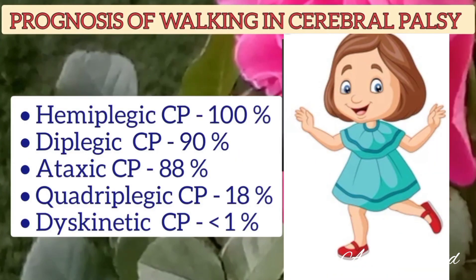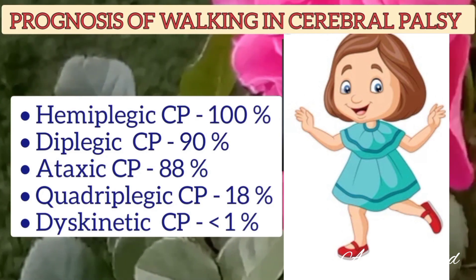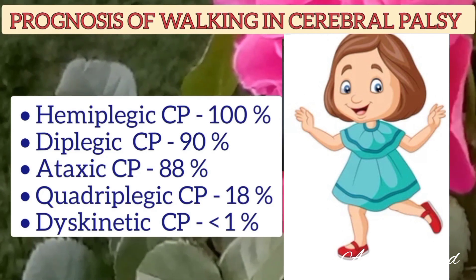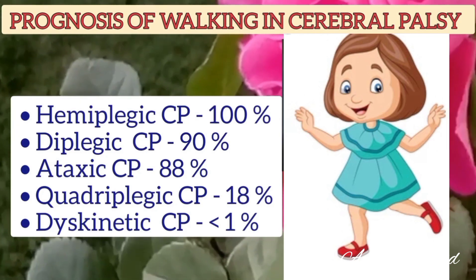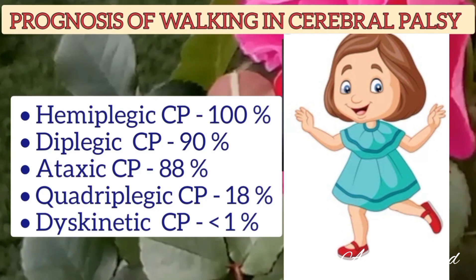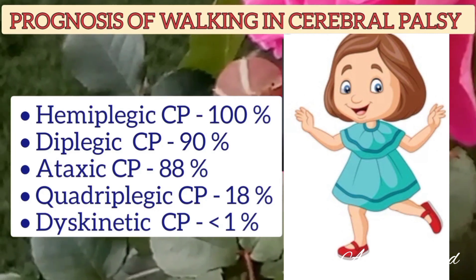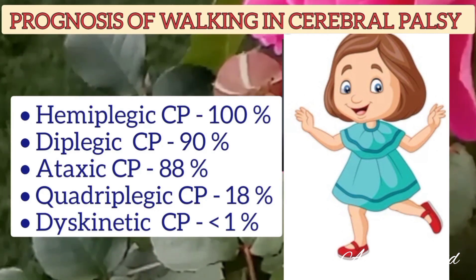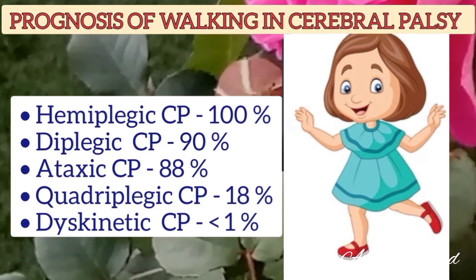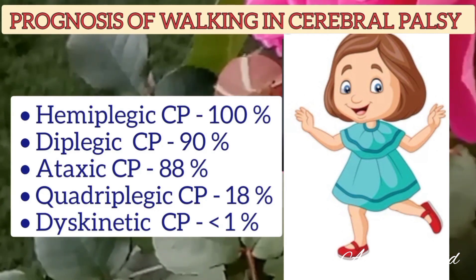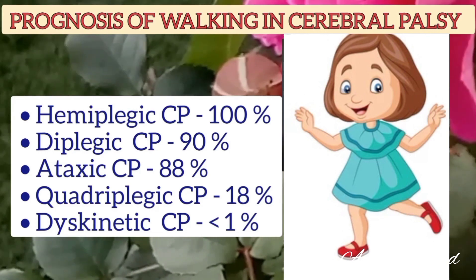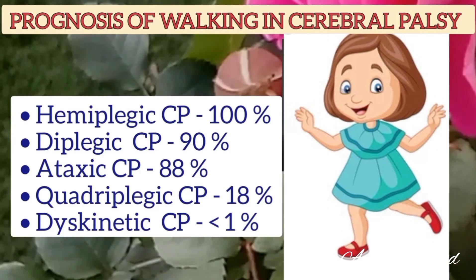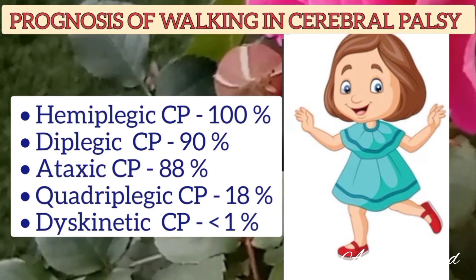Prognosis of walking in cerebral palsy: in hemiplegic cerebral palsy it is 100%; in diplegic, 90%; in ataxic, 88%; in quadriplegic, 18%; and in dyskinetic cerebral palsy, it is usually 0%.